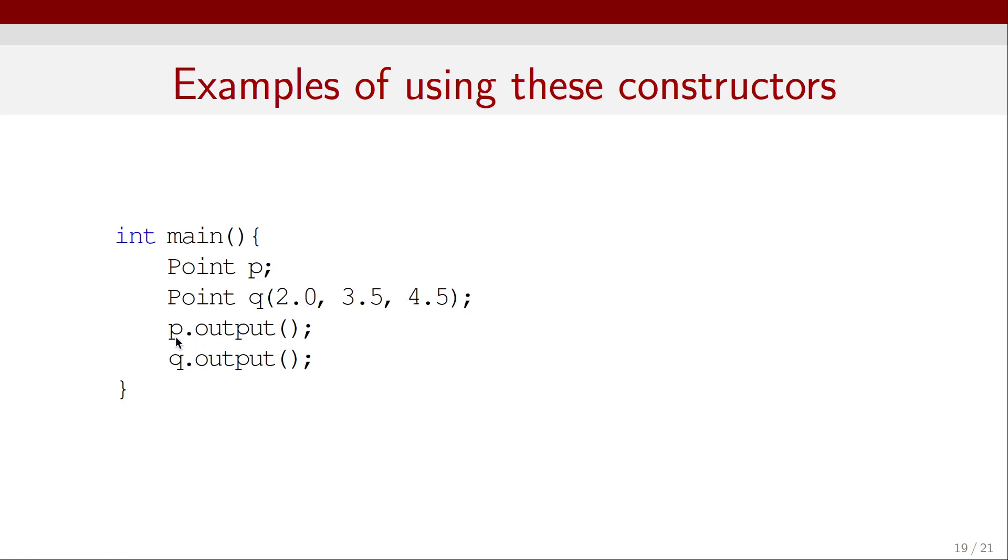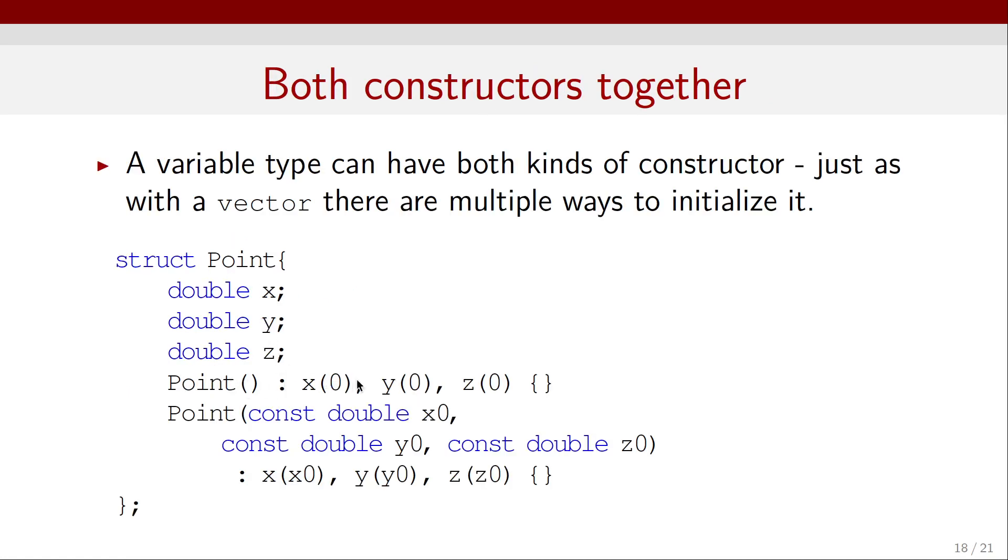So now, if I type P.output and Q.output, I'm going to print out those points. For P.output, we will get zero, zero, zero. And for Q.output, we will get two, three point five, and four point five. And again, for P, we haven't declared any arguments, so by default, the values will be zero because they were initialized using this constructor right here.